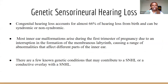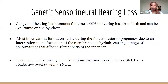The final component is genetic sensorineural hearing loss, including congenital hearing loss, which accounts for almost 66% of hearing loss from birth and can be syndromic or non-syndromic. Most inner ear malformations arise during the first trimester of pregnancy due to an interruption in the formation of the membranous labyrinth, causing abnormalities affecting different parts of the inner ear. There are several known genetic conditions that may contribute to sensorineural hearing loss or a conductive overlay with sensorineural hearing loss affecting high frequencies.